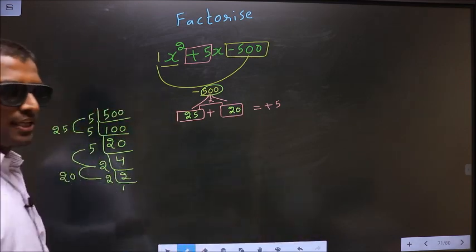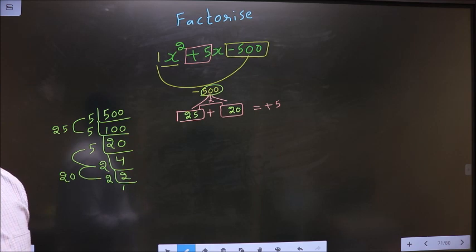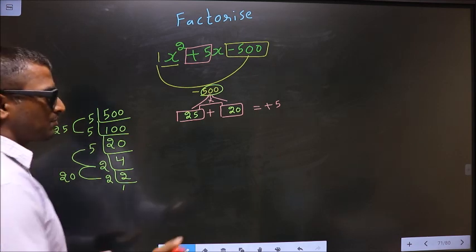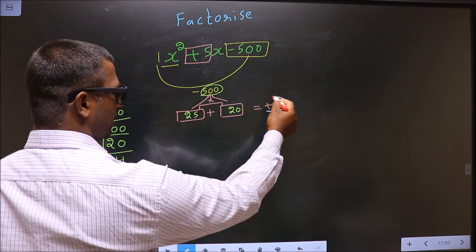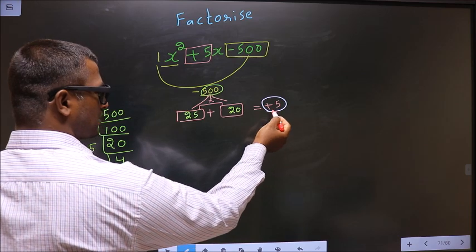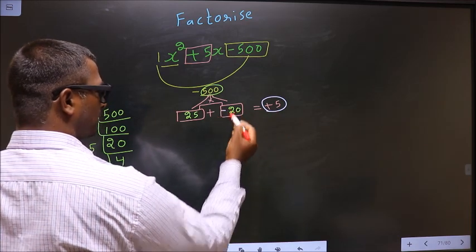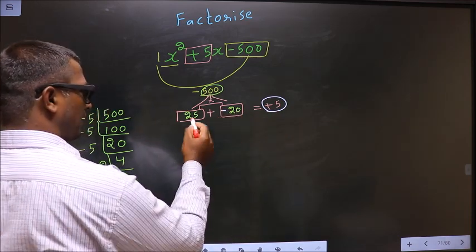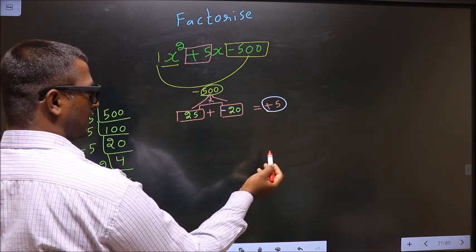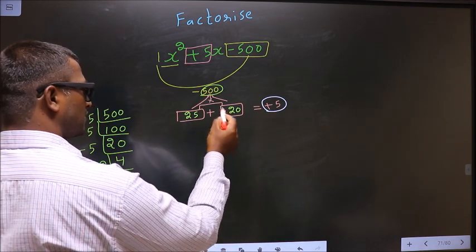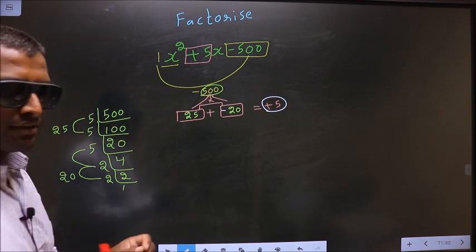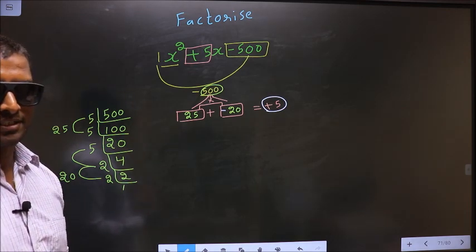Now you should adjust the signs. What I mean is here you should get plus 5. To get plus 5, you should put negative before 20. 25 minus 20 is plus 5. 25 into minus 20 is minus 500. So now the signs are also adjusted.